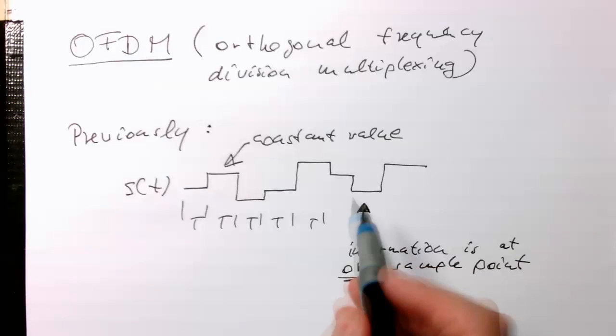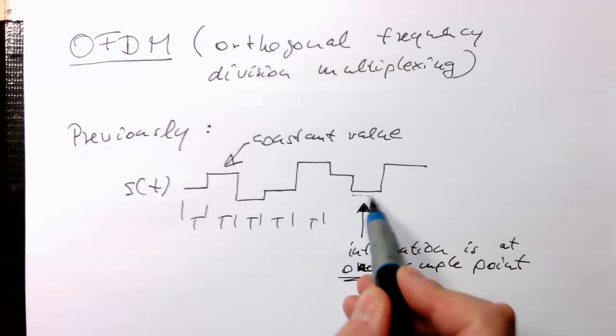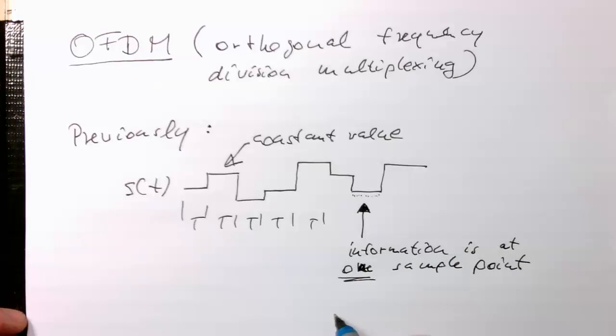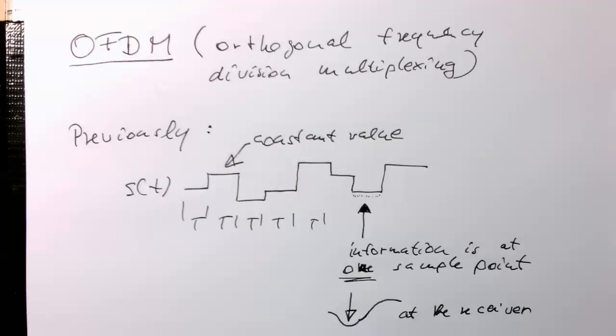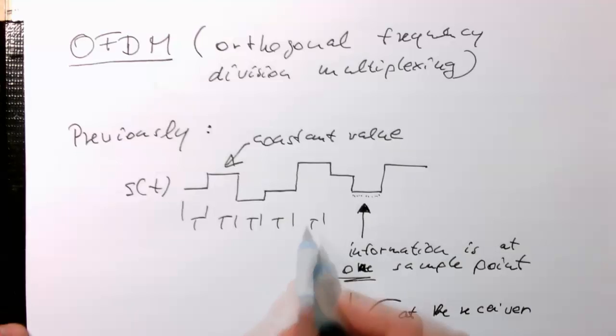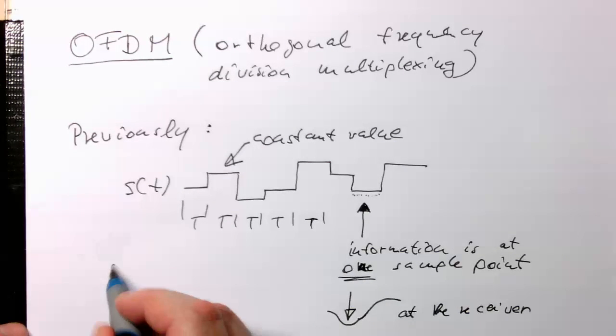So this means we are wasting all the other sample points here. So they are not used. This is probably looking more like something like this. And then we were sampling here at this point here at the receiver to be sure that this level.